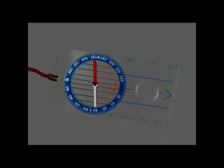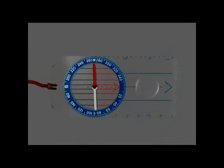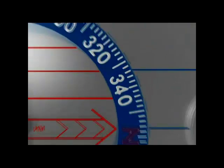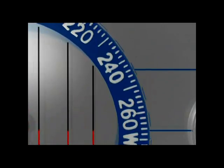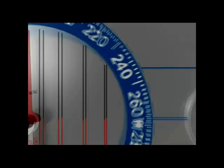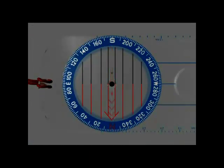The compass dial houses the compass needle which points to north whichever way the compass is turned. Around the edge of the dial are marked the bearings from 0 up to 360 degrees. On this compass every 20th degree is numbered. Marked on the bottom of the dial is a red arrow pointing to 0 degrees or the north point on the dial.